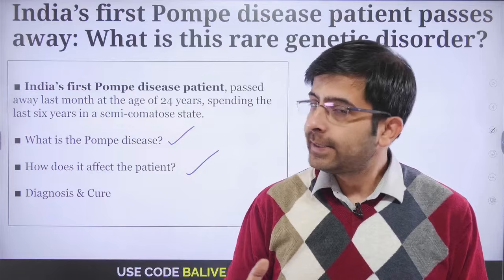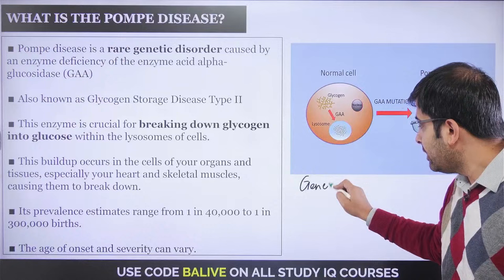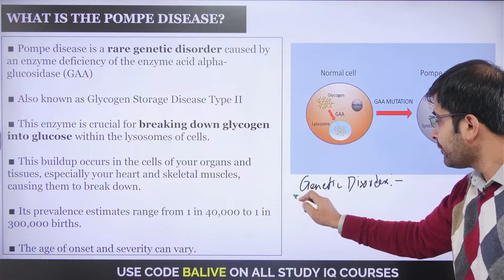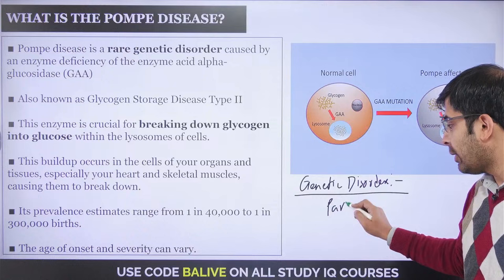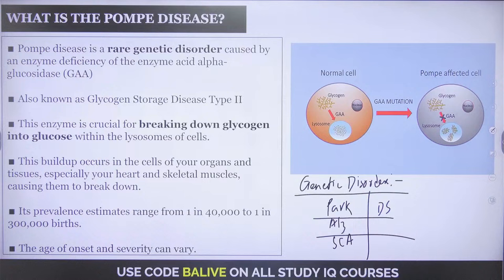One central idea to realize: Pompe disease is a rare genetic disorder. Genetic disorders can happen either due to a mutation of a gene or some defect in the gene — for example, Parkinson's, Alzheimer's, sickle cell anemia, Down syndrome. Pompe disease falls in a similar category but is specifically caused by an enzyme deficiency.